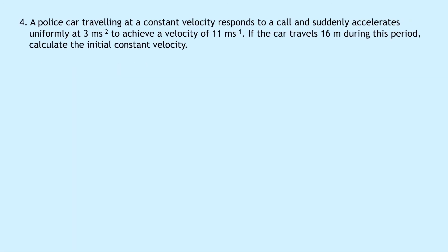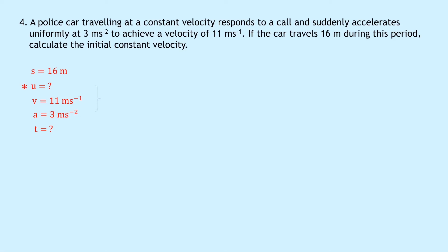Last but not least, question four: a police car traveling at a constant velocity responds to a call and suddenly accelerates uniformly at 3 meters per second squared to achieve a velocity of 11 meters per second. If the car travels 16 meters during this period, calculate the initial constant velocity. Writing down SUVAT on the left: S equals 16 meters, we're trying to find U, the final speed is 11 meters per second, acceleration is 3 meters per second squared, and we don't know the time. Putting a star next to U, writing V squared equals U squared plus 2AS, substituting in gives 11 squared equals U squared plus 2 times 3 times 16. Simplifying, we have U squared equals 25, and square rooting that gives U equals 5 meters per second.